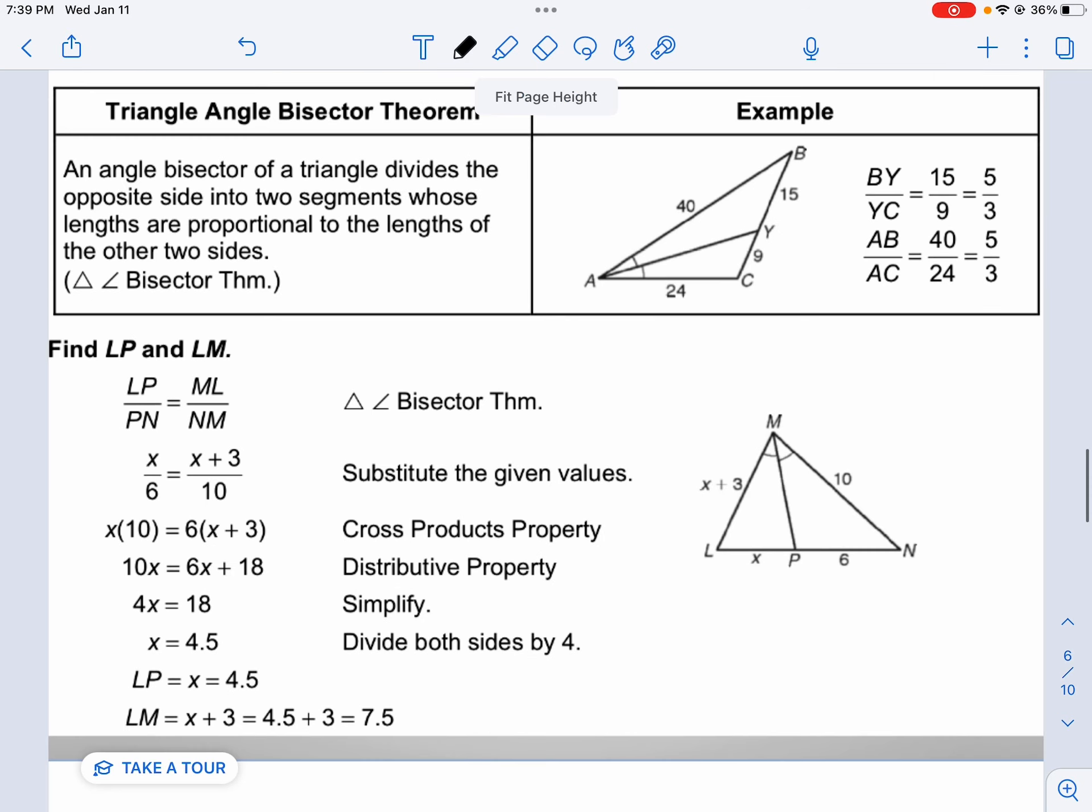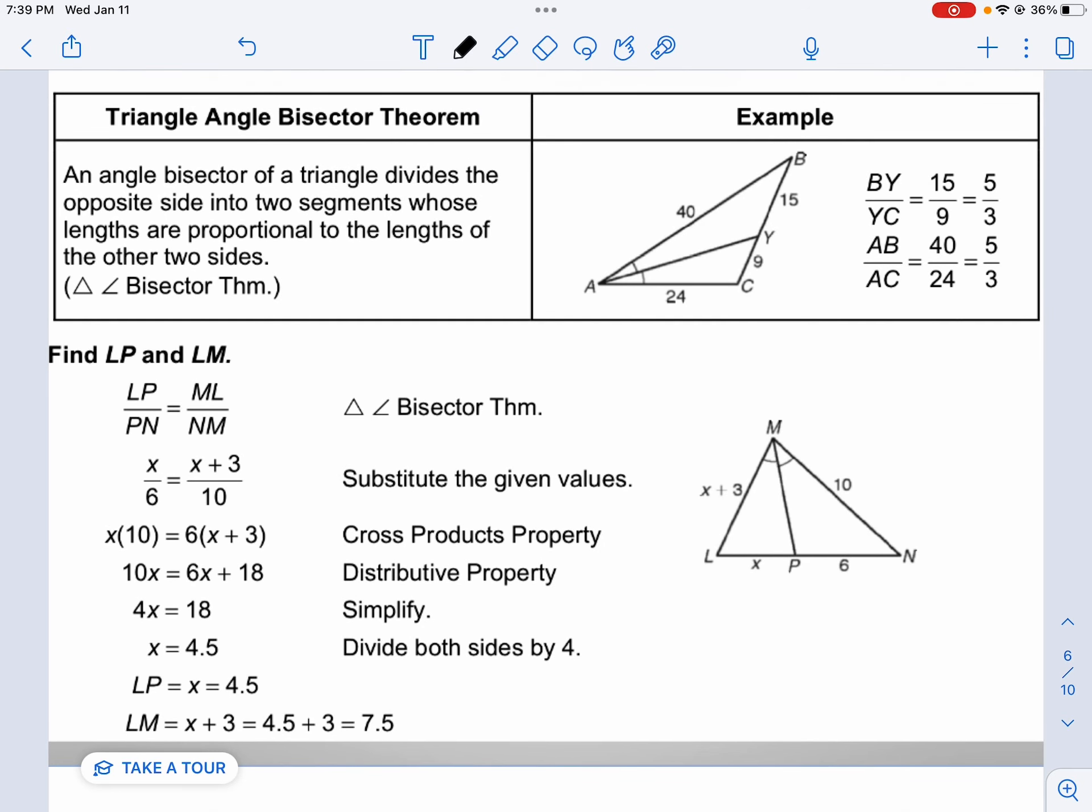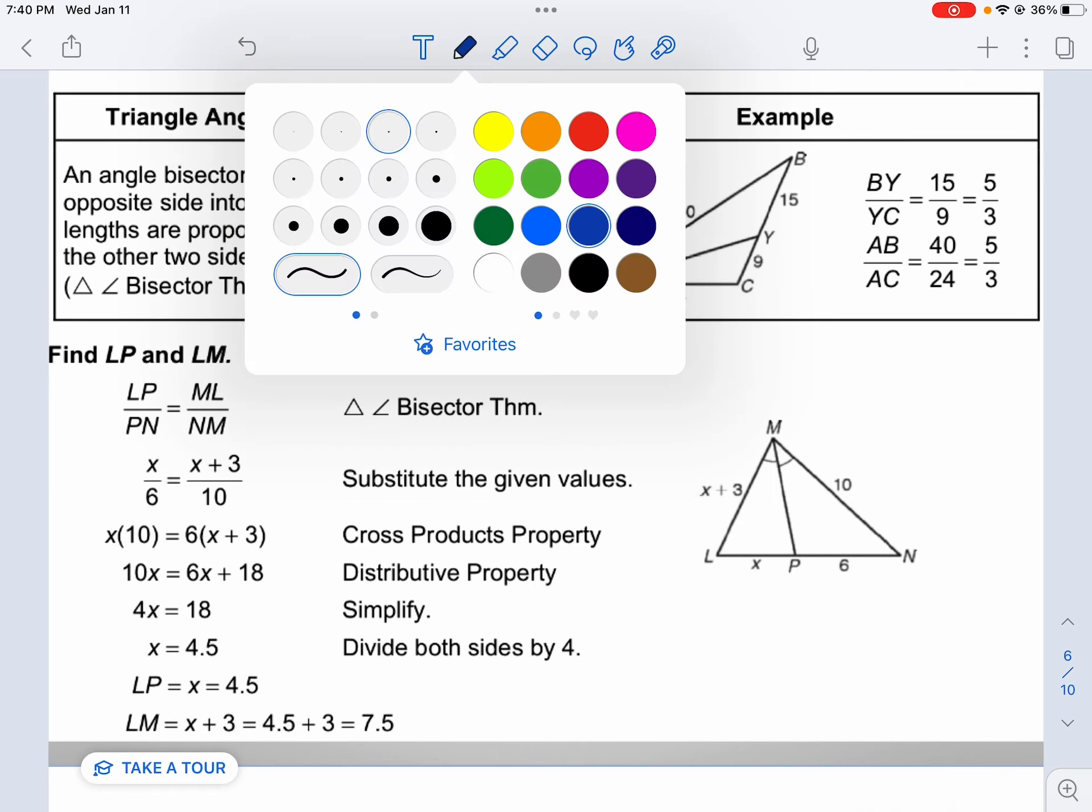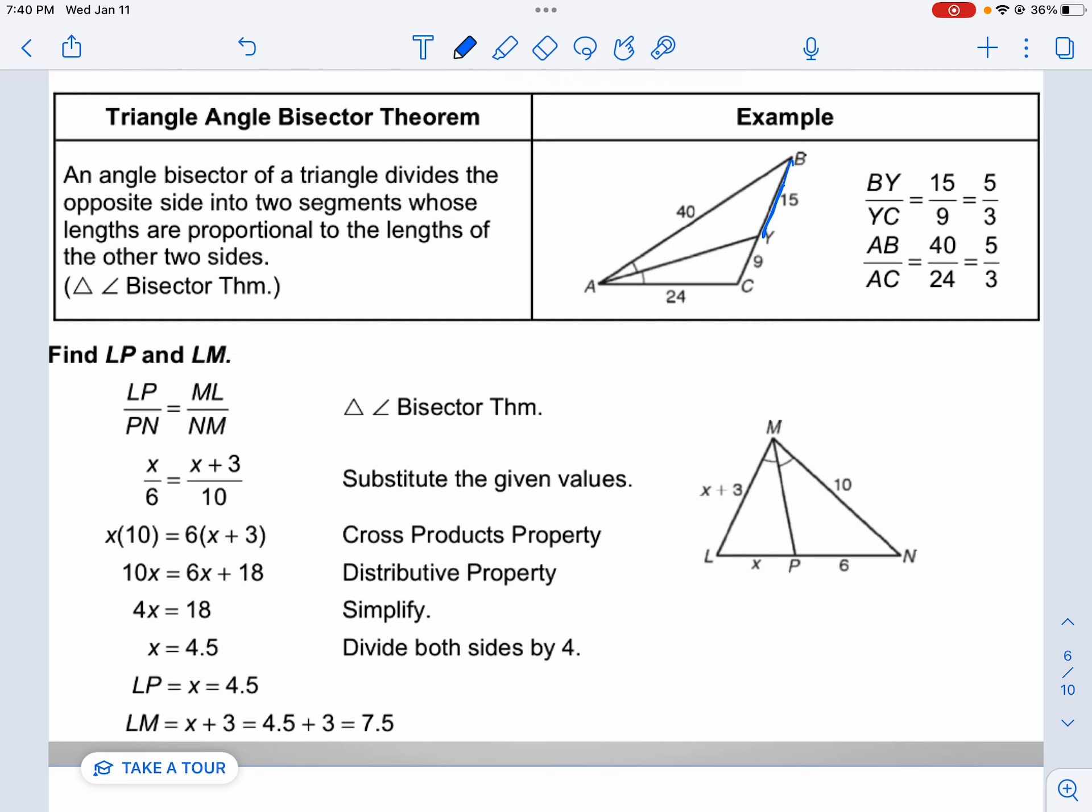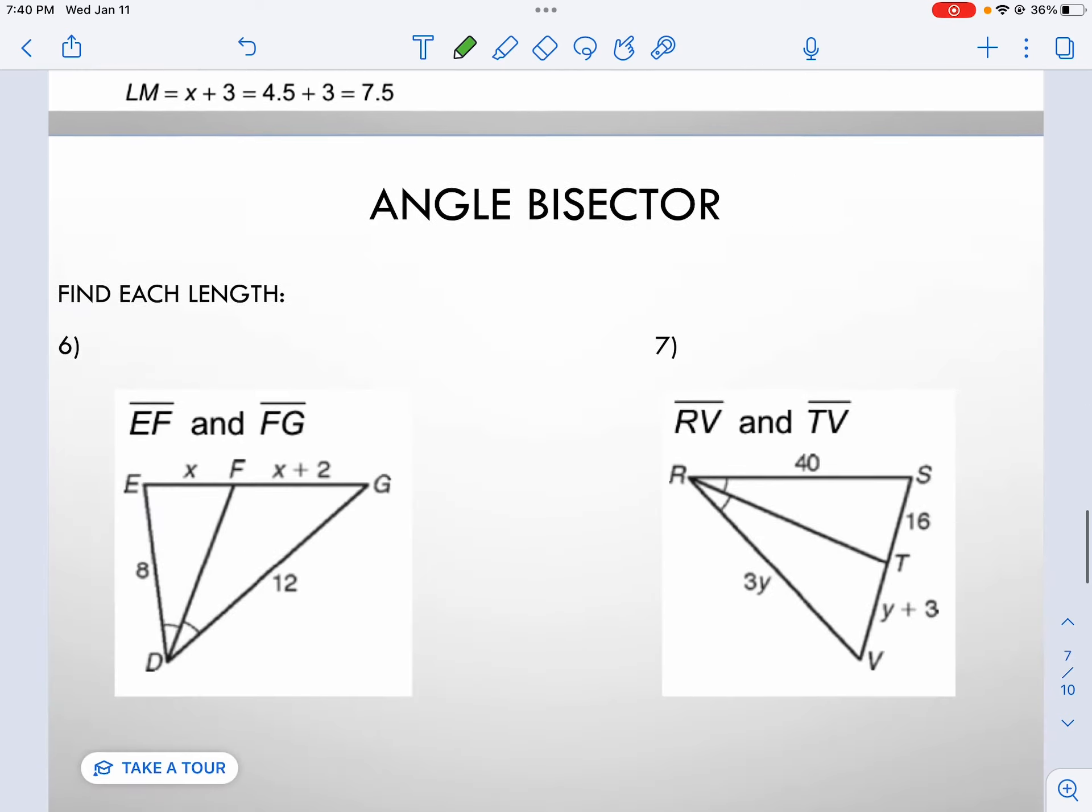The next theorem is the triangle angle bisector theorem. This theorem states that if I have an angle bisector of a triangle that divides the opposite side into two segments, those two segments should be proportional to the lengths of the other two sides. The ratio BY over YC, 15 over 9, should be the same as the proportion of BA over CA.